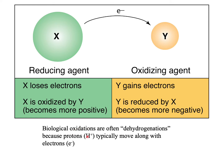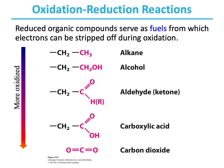Biological oxidations are often dehydrogenations, because protons typically move along with electrons. Here are some examples of oxidation-reduction reactions. Reduced organic compounds serve as fuels, from which electrons can be stripped off during oxidation.